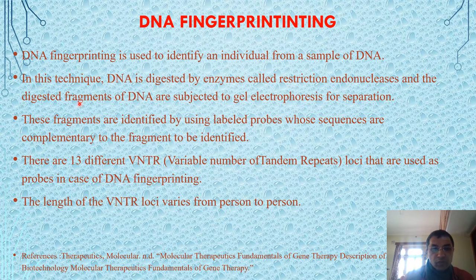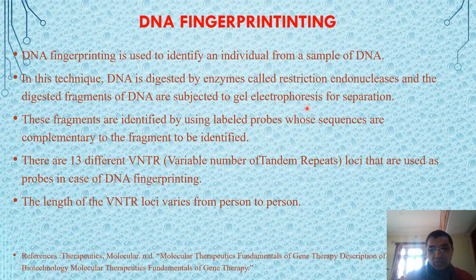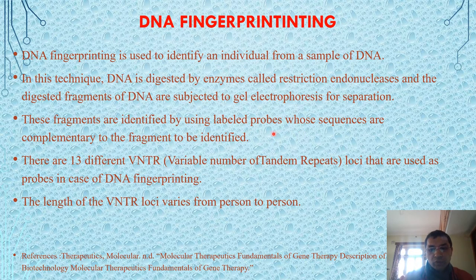In this technique, the extracted DNA is digested by a specific set of enzymes known as restriction endonucleases. That digested fragment of DNA is subjected to gel electrophoresis for separation. These fragments are then identified by using a labeled probe. A probe is a 10 to 15 base pair sequence whose sequence is complementary to the fragment to be identified.